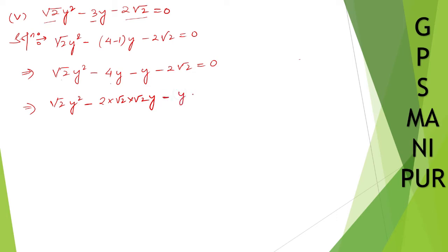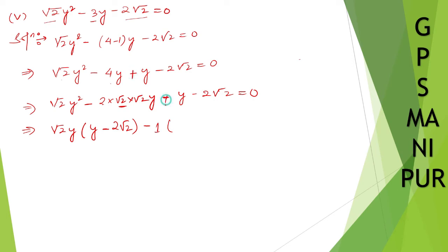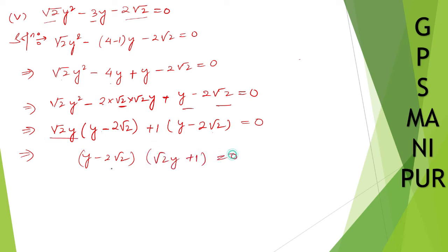Now, minus y minus 2 root 2 equal to 0. So take root 2 y common — root 2 y is taken out common, so y is left here, minus root 2 goes out, 1 root 2 is out, and what's left is 2 root 2. Now take 1 common — minus into minus is plus. So we can take plus 1 common. So: root 2 y times (y minus 2 root 2), and next is 1 times (y minus 2 root 2). You can take (y minus 2 root 2) common, giving: (y minus 2 root 2)(root 2 y plus 1) equal to 0.